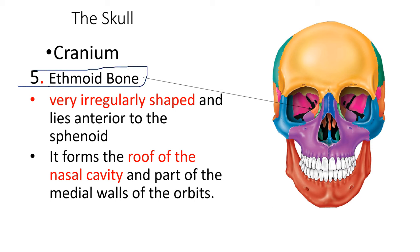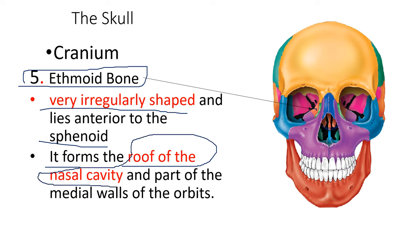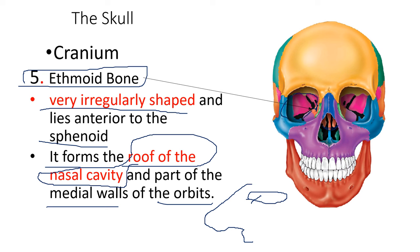Now let's go to the fifth cranial bone — the ethmoid bone. It has a very irregular shape and lies anterior to the sphenoid. It forms the roof of the nasal cavity and part of the medial walls of the orbit. The roof of the nasal cavity is the ethmoid bone, and it also forms the medial walls of the bony orbit.